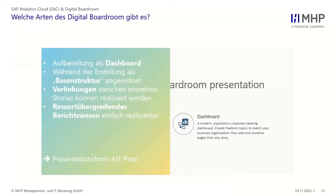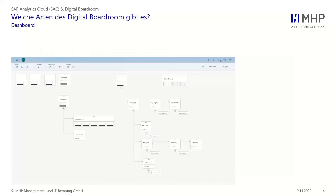Im Gegenzug zur klassischen Agenda gibt es das Dashboard beim Digital Boardroom, was persönlich viel cooler ist – man kann wesentlich mehr damit machen und viel interaktiver mit den Daten umgehen. Die kompletten Storys in diesem Digital Boardroom werden in einer Art Baumstruktur aufbereitet, das heißt, ich habe immer die Möglichkeit, mich zu entscheiden, was ich als nächstes sehen möchte. Das ist so eine Art Prezi-Präsentation: Ich kann zu jedem Zeitpunkt entscheiden, wo ich hin möchte. Im Backend sieht man, wir haben keine lineare Abfolge, sondern bin komplett verzweigt.